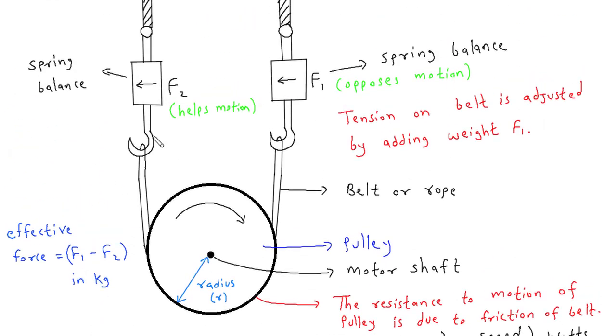The effective force between these two forces will be F1-F2 in kilograms. Since F1 opposes motion and F2 helps motion because this pulley is rotating in clockwise direction.